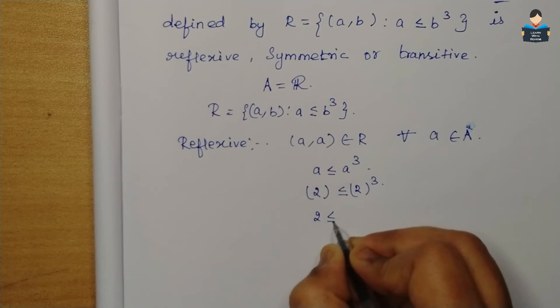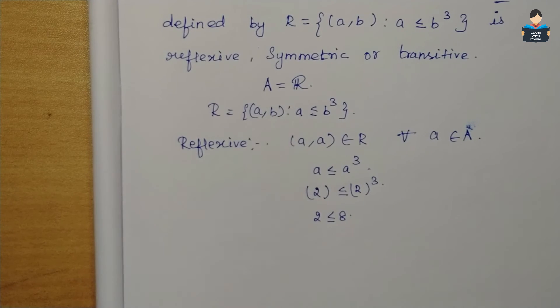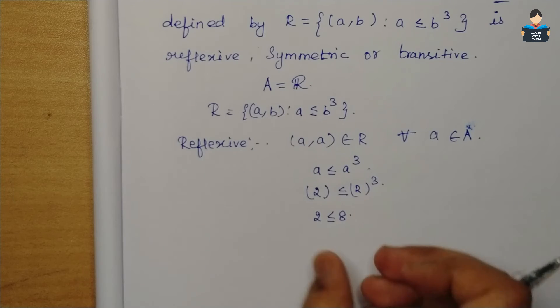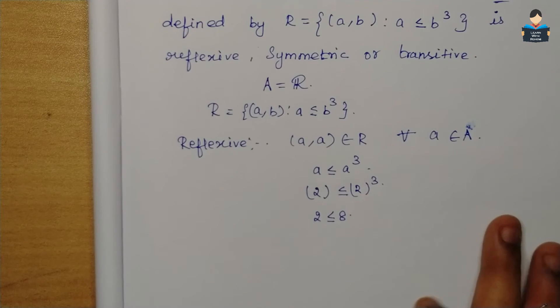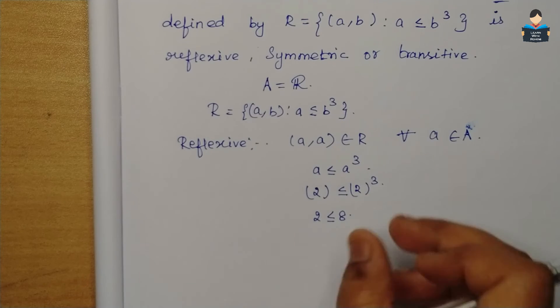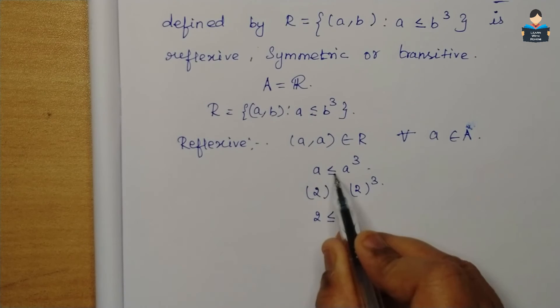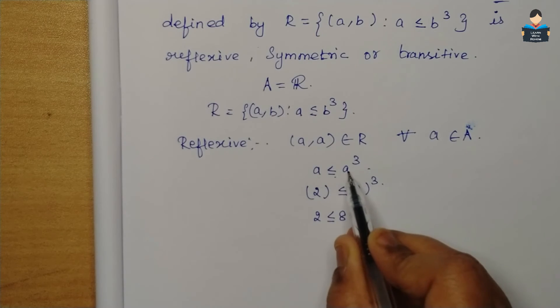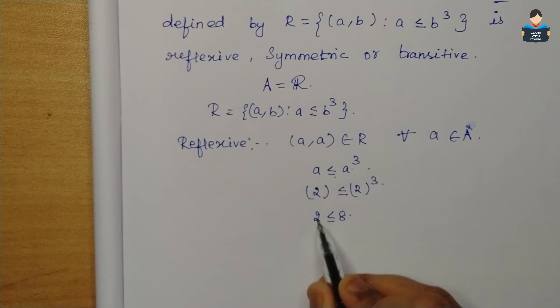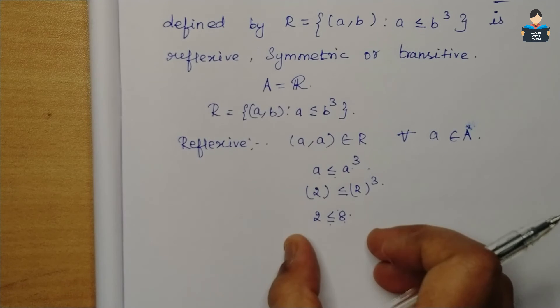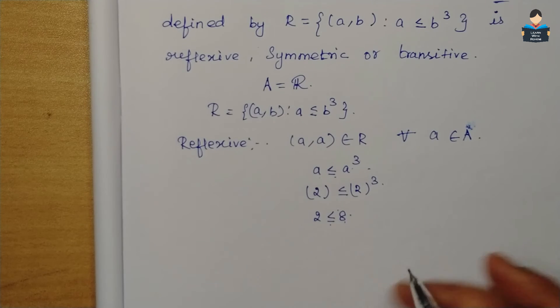2 is less than or equal to 8 — the condition is satisfied. But we also check a rational number. Take a = 1/3: we check if 1/3 is less than or equal to (1/3)³, that is, 1/3 ≤ 1/27.